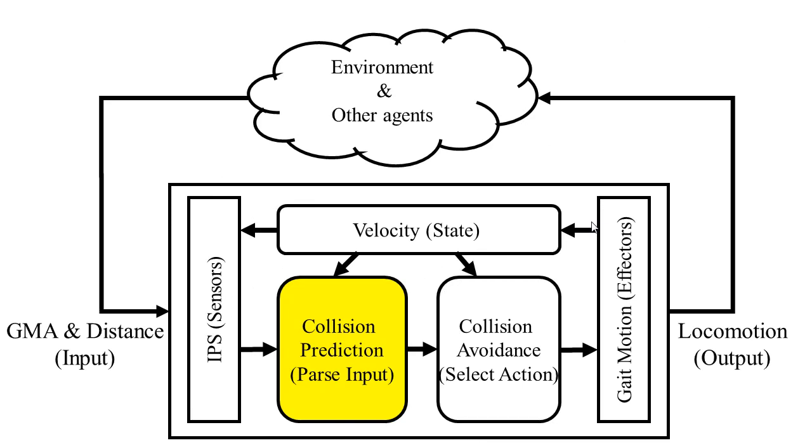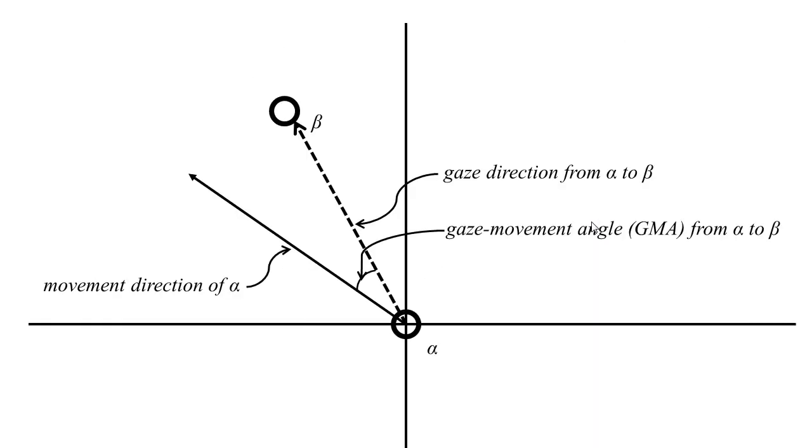To predict collision with other agents, the proposed model checks variations in both the GMA of other agents and the distance to the other agents.